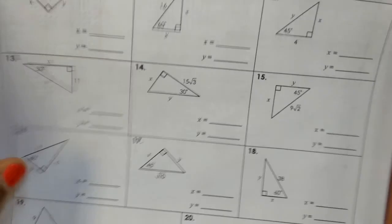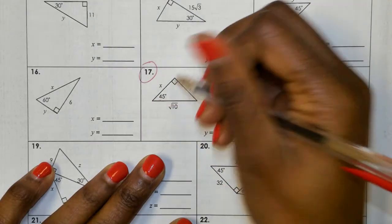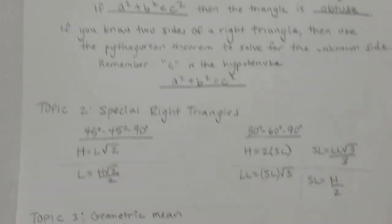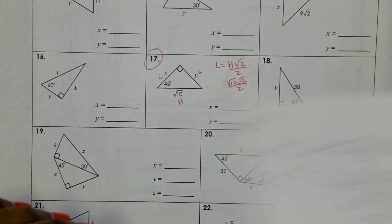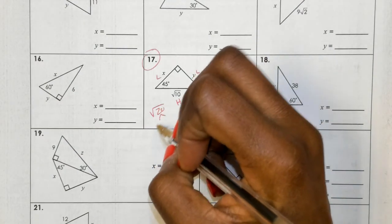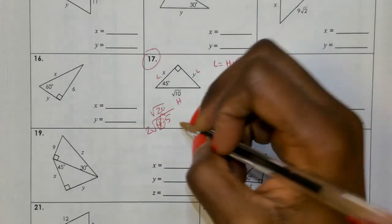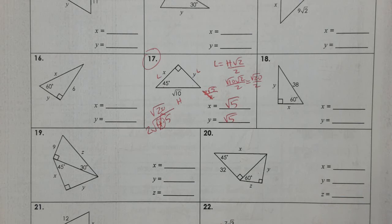Now for number 2 on the back — this is a 45-45-90 so we have two legs and a hypotenuse. We're looking for a leg. Using the formula: leg equals H times radical 2 over 2, where H is radical 10. Multiplying gives radical 20 over 2. Since 20 breaks down into 4 times 5, and the square root of 4 is 2, this becomes 2 radical 5 over 2, and the 2's cancel, leaving radical 5.